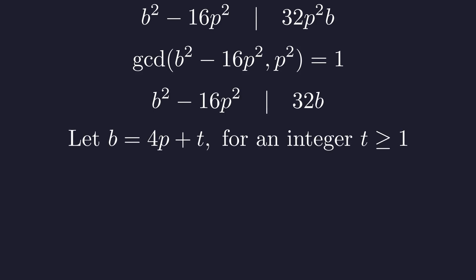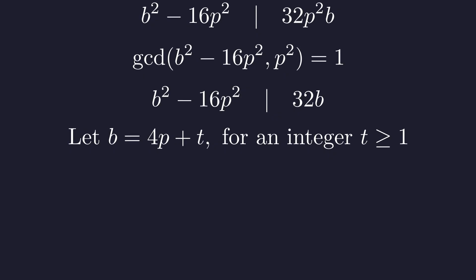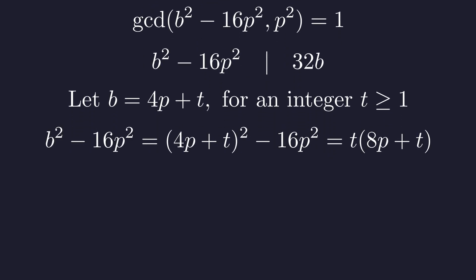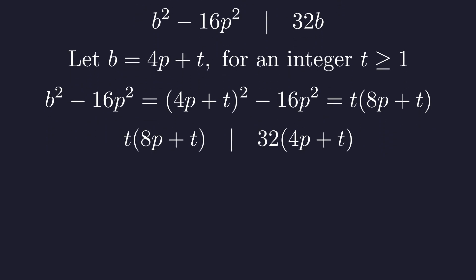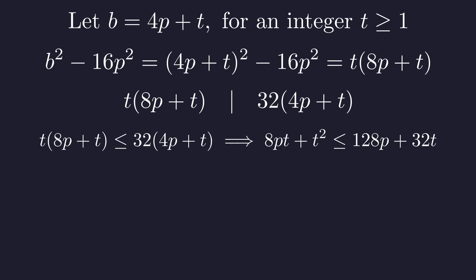Since b is bigger than 4p, let's write b as 4p plus t for some positive integer t. Substituting gives us t times 8p plus t. So t times 8p plus t has to divide 32 times 4p plus t. Since everything's positive, the thing doing the dividing can't be bigger than what it's dividing. This gives us a useful inequality.